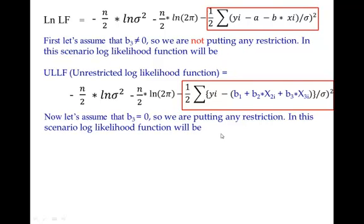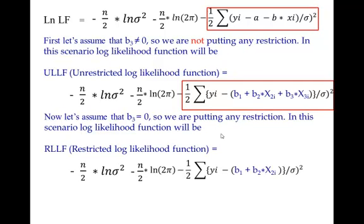Now let's assume when b3 is zero. Please note when we are putting b3 equal to zero, you are putting a restriction. So in this scenario, the log likelihood function is called restricted log likelihood function, and that's how you get the equation. Just note here b3 is not there. Now this particular term is nothing but the error term again. So now let me ask you this way: this error is going to be more or this error is going to be more? Obviously, this error is going to be more.